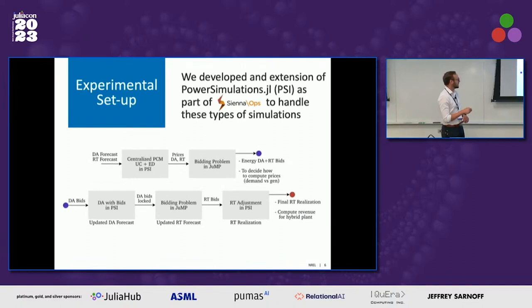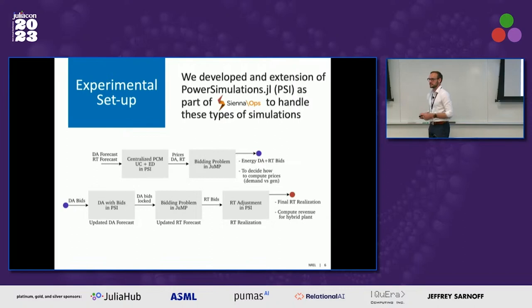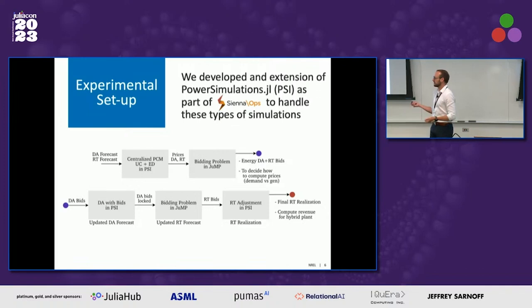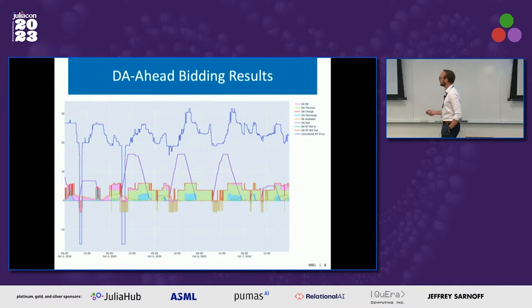In our experimental setup, we generate price forecasts and create a bidding problem in JuMP to pass those bids into a market clearing engine in Siena. We can then lock or fix those bids and run the real-time simulation to see how the hybrid adjusts to updated bids and updated forecasts, run the adjustment period, and compute the revenue for the hybrid system. A key element is the hybrid system's flexibility — making a bid in the day-ahead with the forecast, then re-adjusting the bid in real time given what was awarded in the day-ahead and the new forecast.